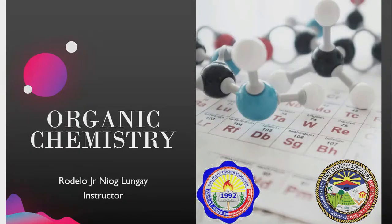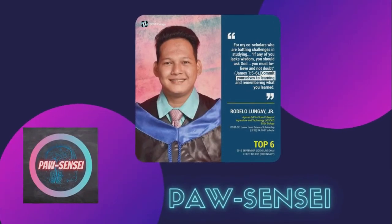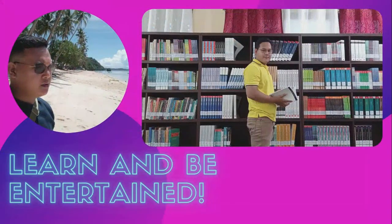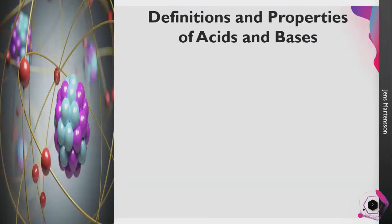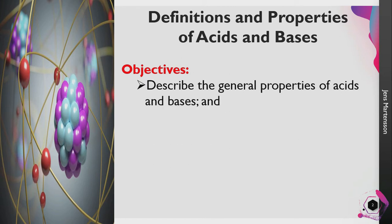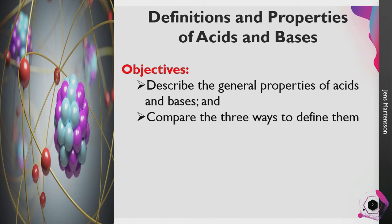Good afternoon students. This time we will be discussing a new topic in our subject, organic chemistry. We will be talking about definitions and properties of acids and bases. Before we go to our discussion, let us first familiarize ourselves with the lesson objectives. After this discussion, you are expected to describe the general properties of acids and bases and to compare the three ways to define them.